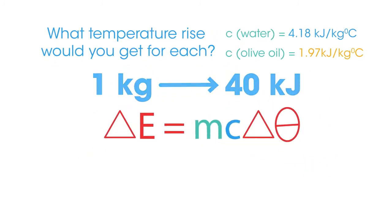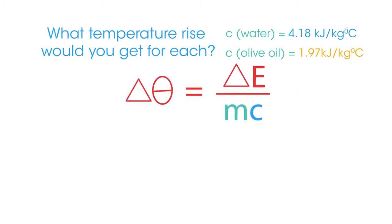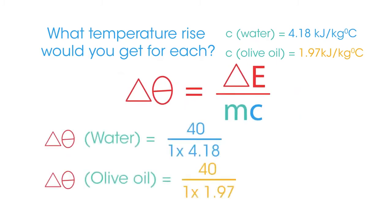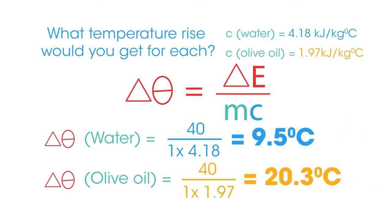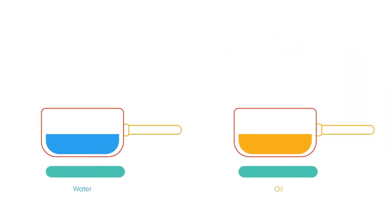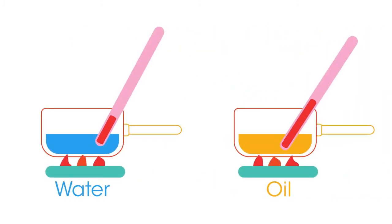If we rearrange the equation, Δθ is the temperature rise. For water we get 9.5 degrees Celsius, and for olive oil we get 20.3 degrees Celsius. Oils have a much lower specific heat capacity than water, so they heat up much quicker when exposed to an identical heat source. This is why we are often surprised how fast a pan of oil heats up when we are cooking.